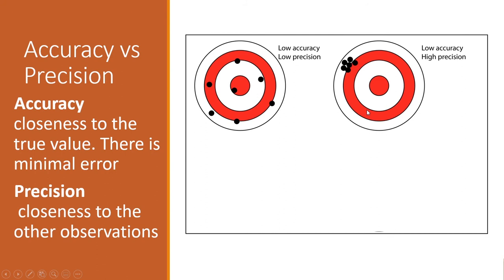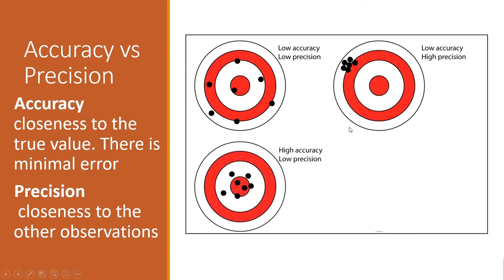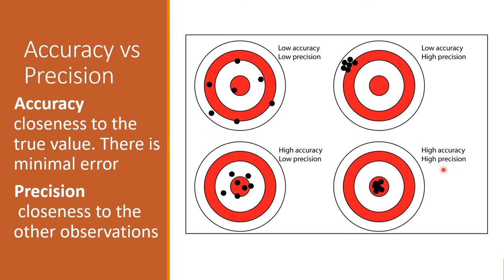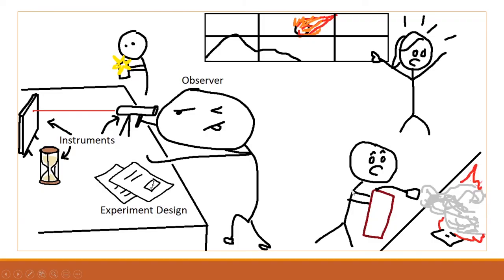How about this one? Low accuracy and high precision. High precision obviously - they're all close to each other. But low accuracy - they don't hit the bullseye.